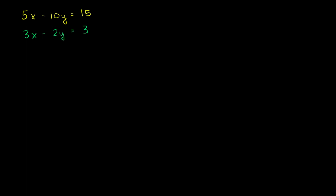The answer is we can multiply both equations in such a way that one term cancels out with another. Let's say we want to cancel out the y terms. I'll rewrite 5x minus 10y equals 15. Is there anything I can multiply the second equation by so that the negative 2y term becomes a term that cancels with negative 10y? I want to make negative 2y into positive 10y, so it cancels when I add the left-hand sides. If I multiply by negative 5, negative 5 times negative 2 gives positive 10. So let's multiply that equation by negative 5.